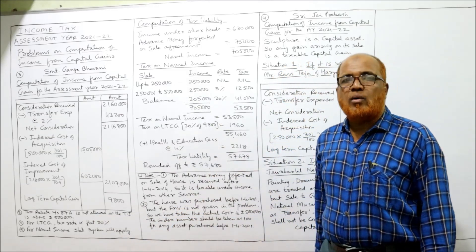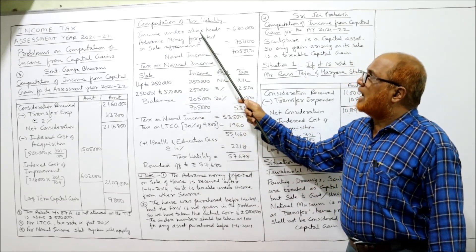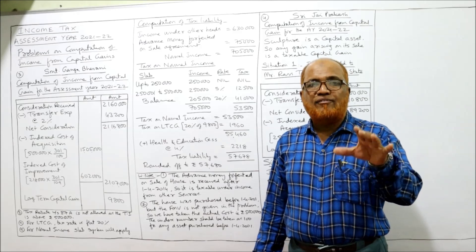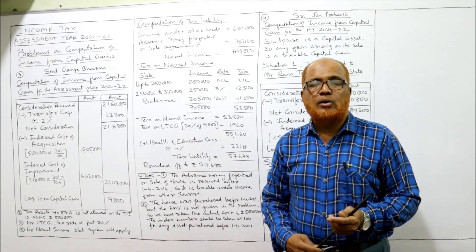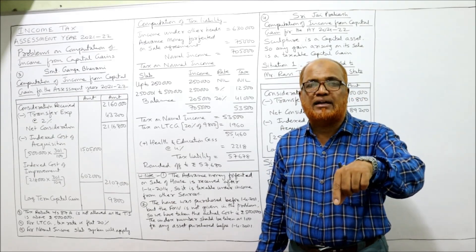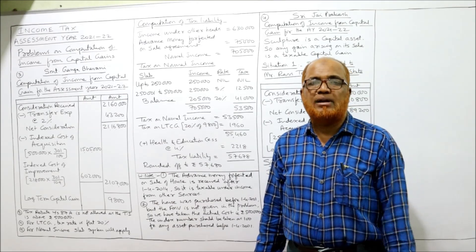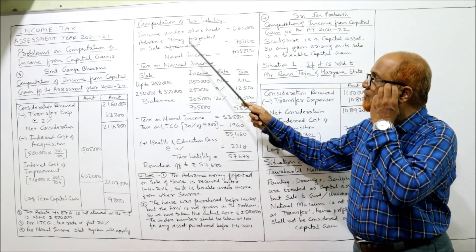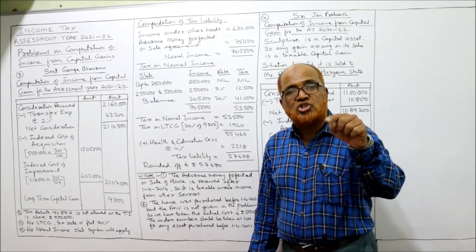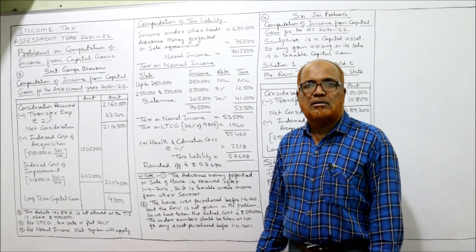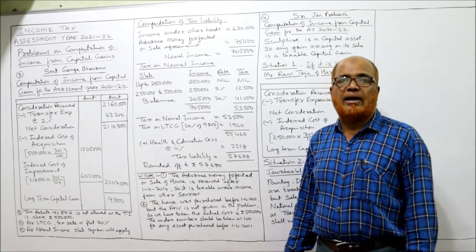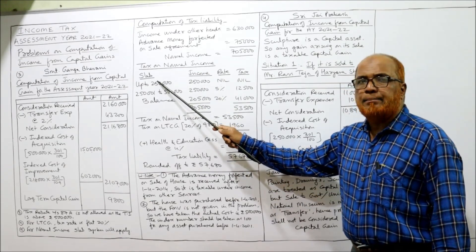Now we calculate the tax liability. Income under other heads is rupees 6 lakh 30,000 as given. The advance money of rupees 75,000 was forfeited after 1/4/2014, so it is taxable under income from other sources. Total normal income = rupees 7 lakh 5,000. Remember: long-term capital gain is a special income taxed at a flat rate of 20%, while other normal income is taxed under the slab system.